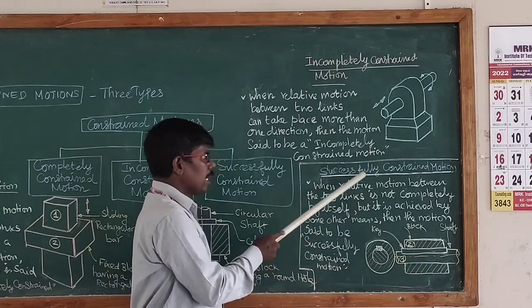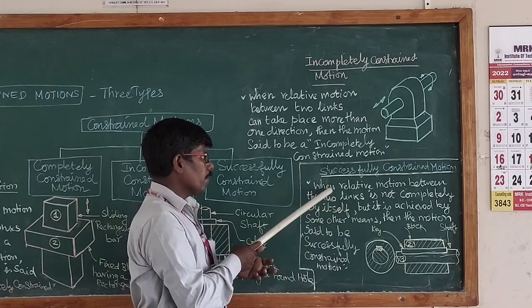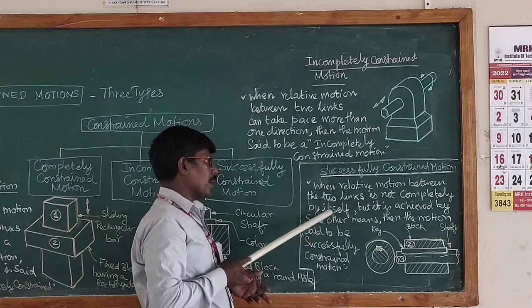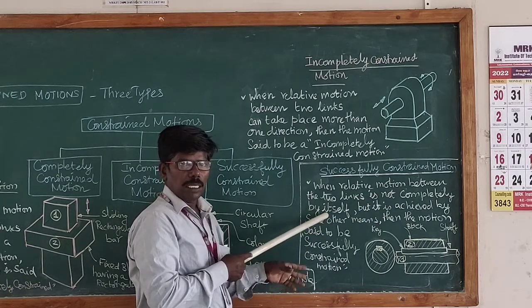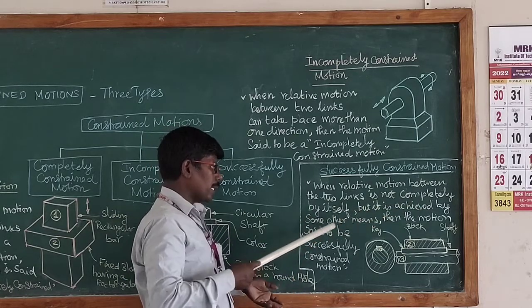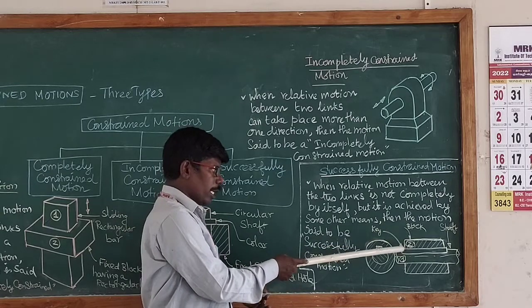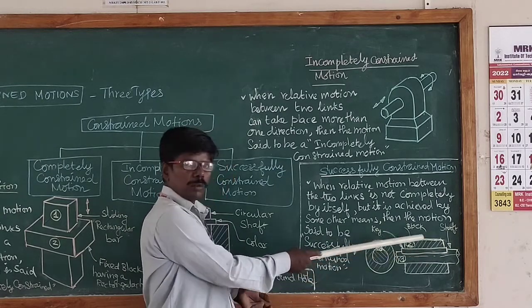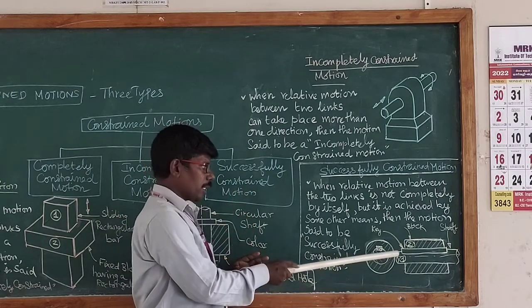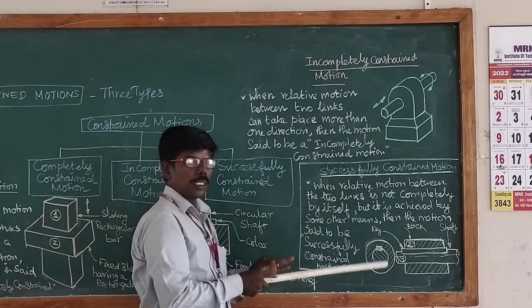This is called successfully constrained motion. When the relative motion between the two links is not completed by itself, but it is achieved by some other means — for example, a fixed block with a key — the shaft and the block can be fixed. If you rotate the shaft, then you rotate the block as well. This is a successfully constrained motion.